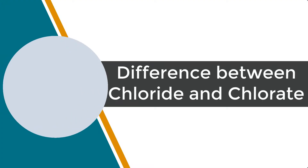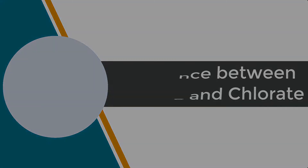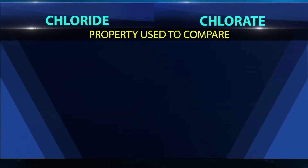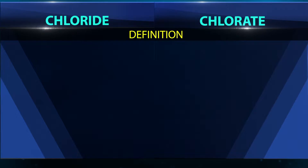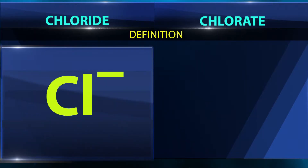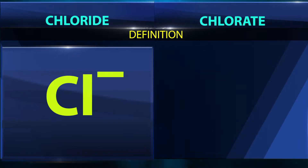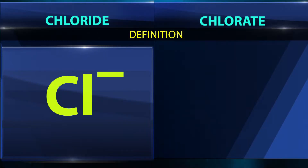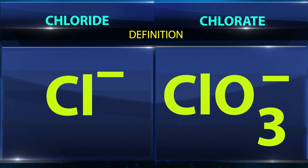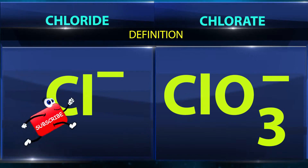The difference between chloride and chlorate: the term chloride refers to the anion given as Cl⁻, while the term chlorate refers to the anion having the chemical formula ClO₃⁻.